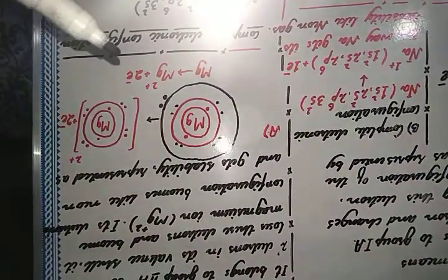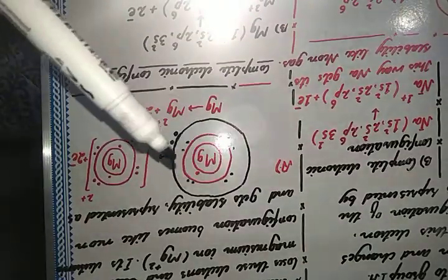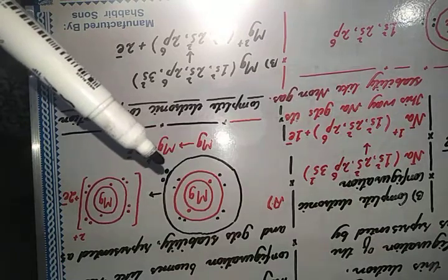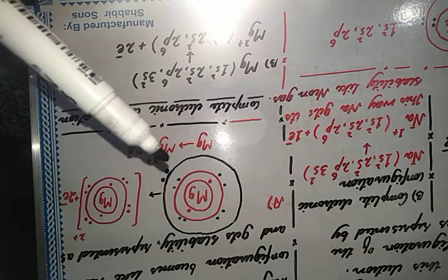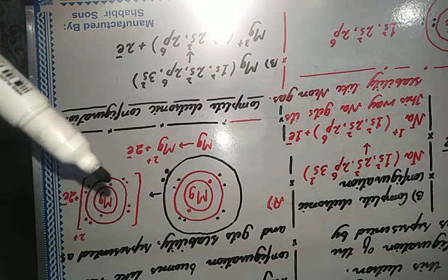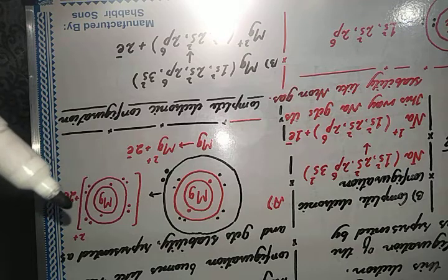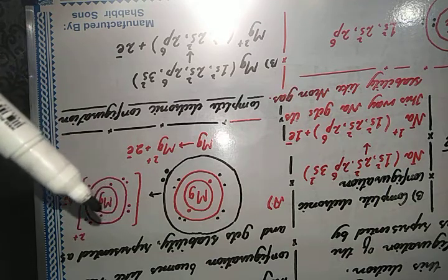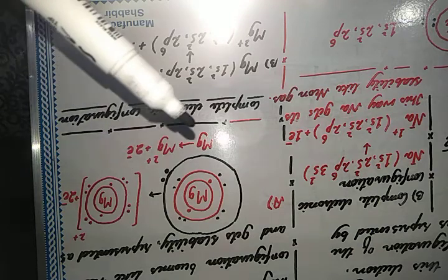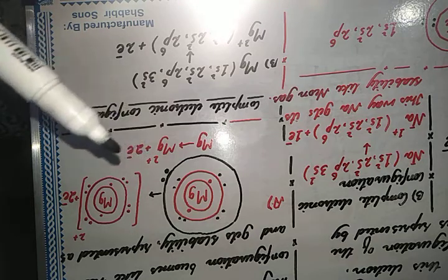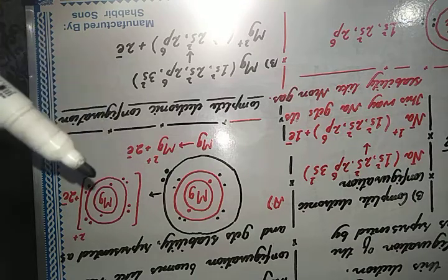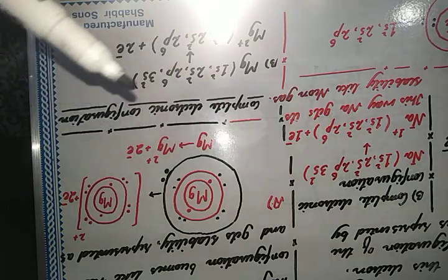In the Lewis dot structure, magnesium's K shell has two electrons, the L shell has eight electrons, and the M shell has two electrons. The magnesium atom loses these two outer electrons. You represent the magnesium cation in parentheses with two electrons in K and eight in L, writing it as Mg²⁺ — those two electrons are lost to form the cation and gain stability.